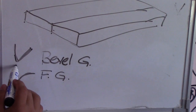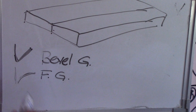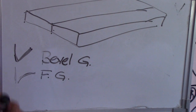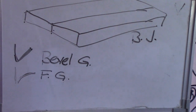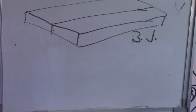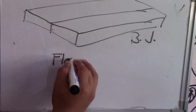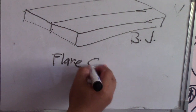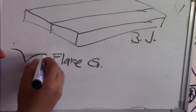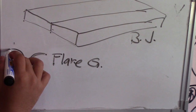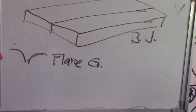Next is flare groove. I'll abbreviate it — flare groove. This is the symbol of flare groove. When you see that symbol, this is flare groove — it goes straight and has an arc like that. Next is flare B groove — its symbol has two arcs like this. That is the symbol of flare B groove.